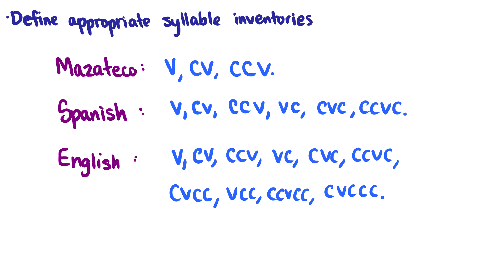In Spanish, of course, you can have VCV, CCV, VC, CVC, or CCVC, but you can never have, say, two consonants in the coda. While English allows things such as two consonants in the onset and two consonants in the coda, or even three consonants in the coda. So we can talk about these syllable inventories with the CV tier very simply.